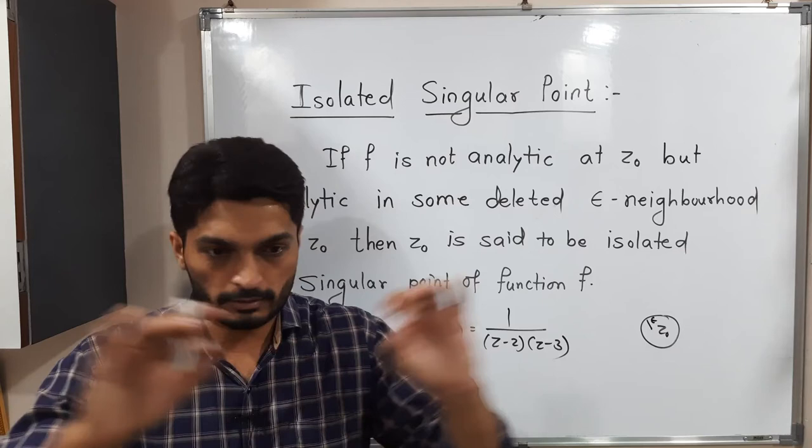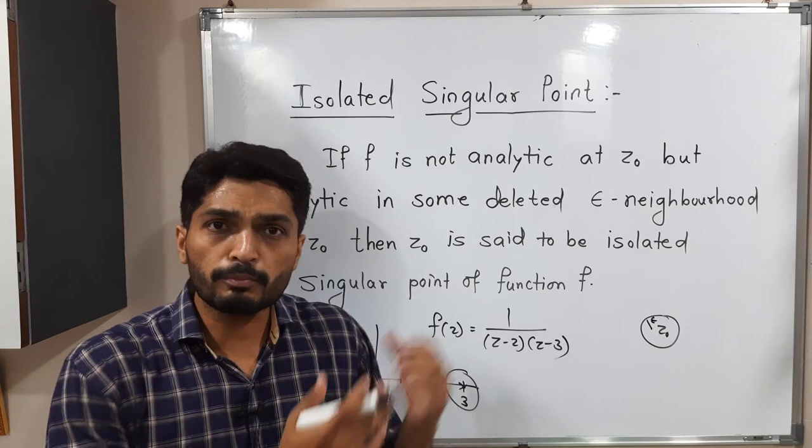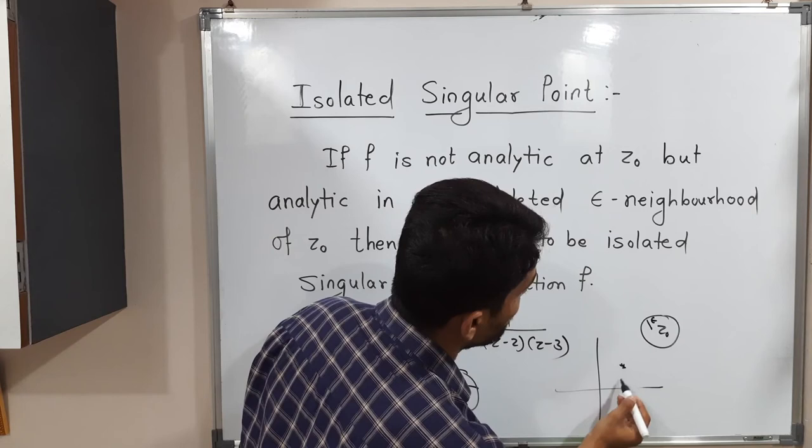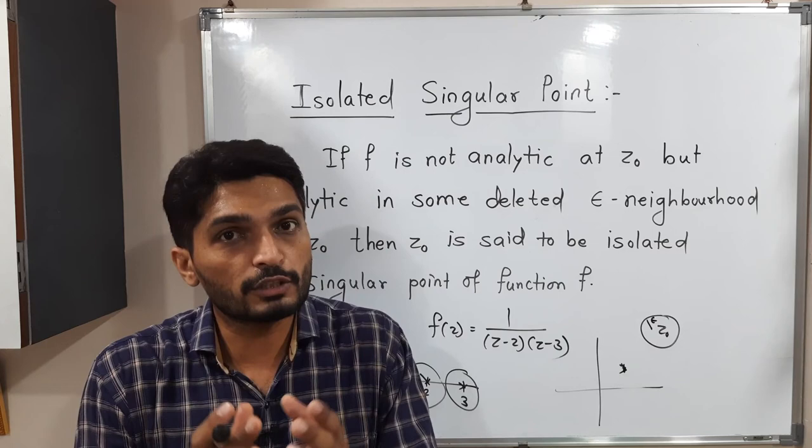The next concept is non-isolated singularity. Non-isolated means the singularities are very close to each other. If you draw the diagram, the singularities are so close that you cannot distinguish between them. Such singularities, which cluster together, are called non-isolated singularities.